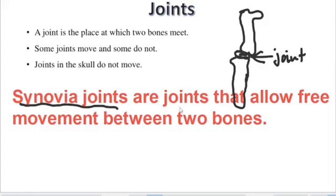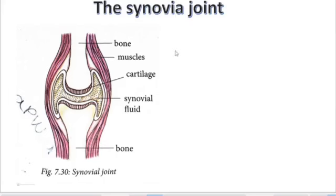Synovial joints are joints that allow free movement between two bones. Examples include the shoulder joint, the hip joint, and the knee joint. These synovial joints consist of synovial fluid, which helps in movement. Looking at the diagram of a synovial joint, we have a bone, muscles, cartilage, and synovial fluid.